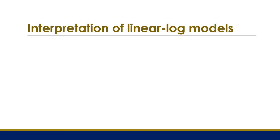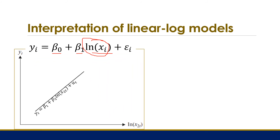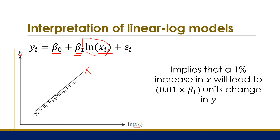The linear-log model has the form y_i = beta naught + beta 1 ln(x_i) + error term — here the predictor is in logarithm form. After transformation, plotting y against the logarithm of x gives a straight line. The interpretation of beta 1 is: a one percent increase in x will lead to 0.01 × beta 1 units change in y. Notice that the change in y is in units because y is not in logarithm form.